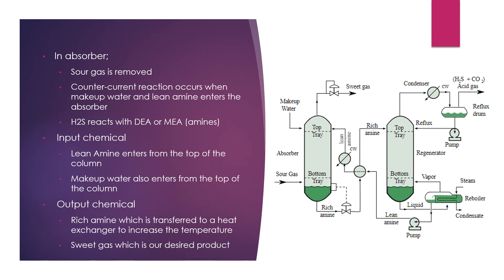In the absorber, the sour gas is removed and a counter-current reaction occurs when makeup water and lean amine enter the absorber. H2S reacts with DEA or MEA amines. The input chemicals for the absorber are lean amine entering from the top of the column and makeup water also entering from the top of the column. The output chemicals are rich amine, which is transferred to a heat exchanger to increase the temperature, and sweet gas, which is the desired product.